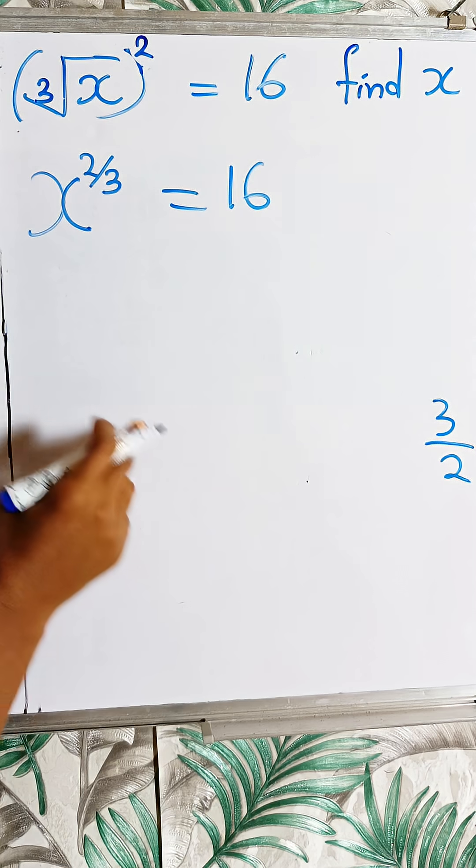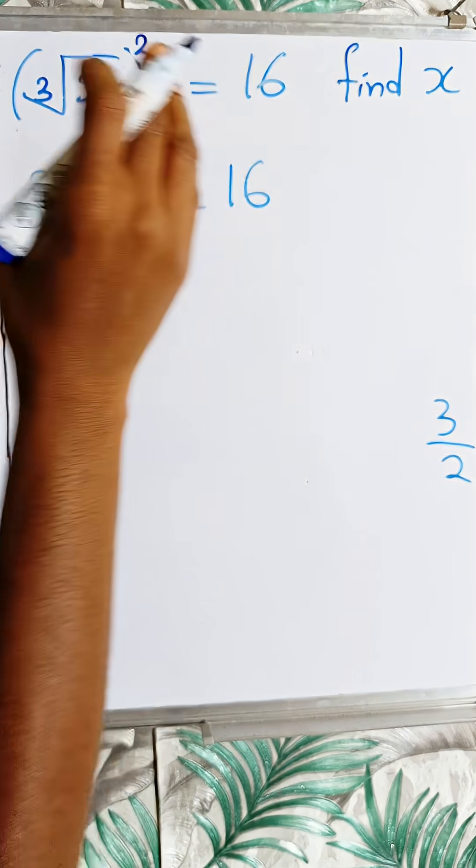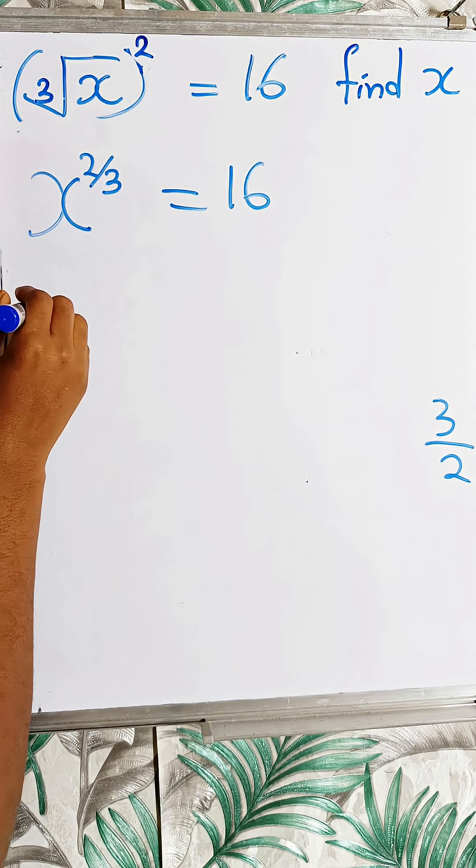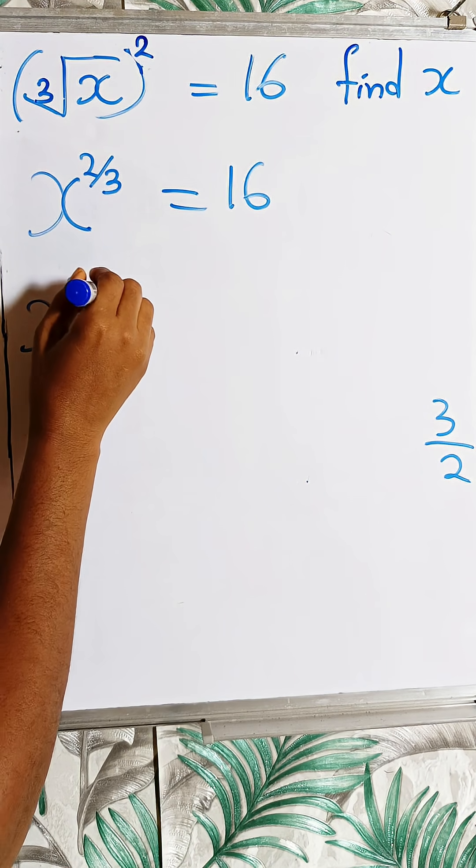Let me write it here. So we have to raise both sides of the equation to 3 over 2. So now I have here x raised to power 2 over 3,